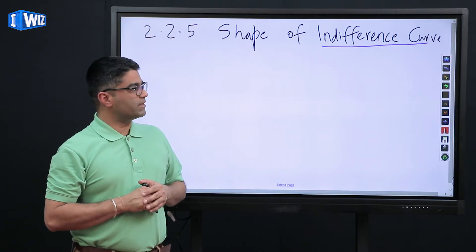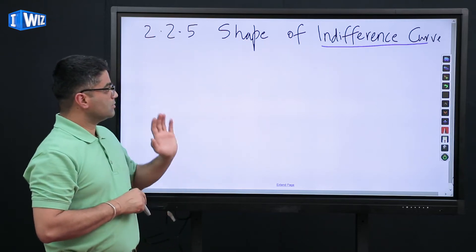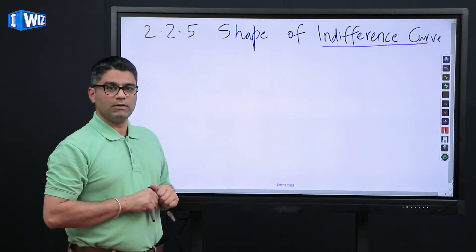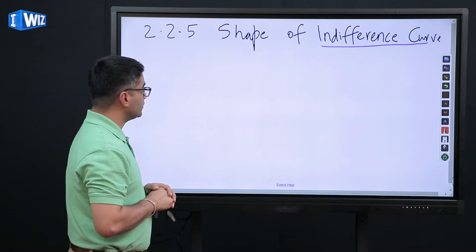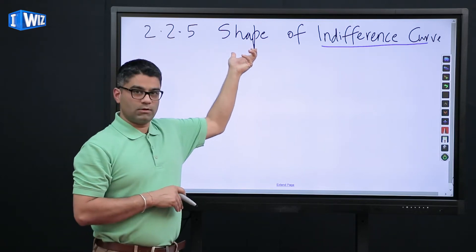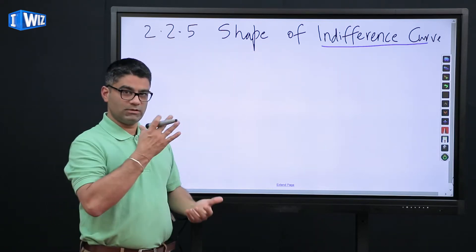If you're not comfortable with what an indifference curve is or what the bundles on indifference curve means, go review the link on the top right. So given the fact that we are indifferent between all the combination of different bundles, now we're going to talk about why the curve looked the way it did in the previous lecture.